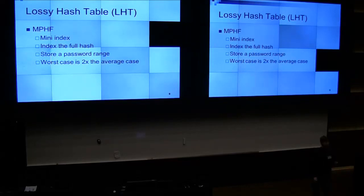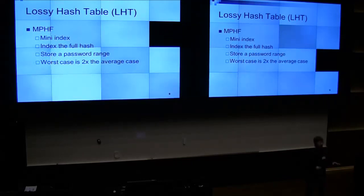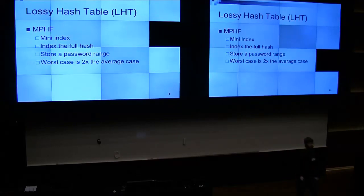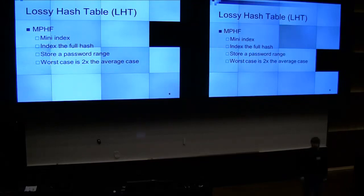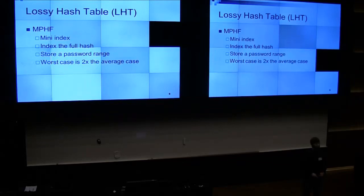We store a password branch — instead of storing a human-readable password, we generate a number that represents it. Then instead of storing that large number, we store a couple of bits representing a range of passwords. Worst case is two times the average case — when you do a lookup, it gives you one password branch so you need to brute force. Average case you find it halfway through; worst case at the end.